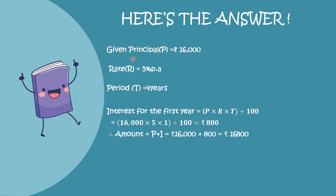The answer: principal is equal to 16,000, rate is equal to 5%, period is 4 years. Interest for the first year uses the formula PRT divided by 100, giving us 16,000 × 5 × 1 ÷ 100, which is equal to 800. Therefore, amount equals P plus I, which is 16,000 plus 800, equal to 16,800.